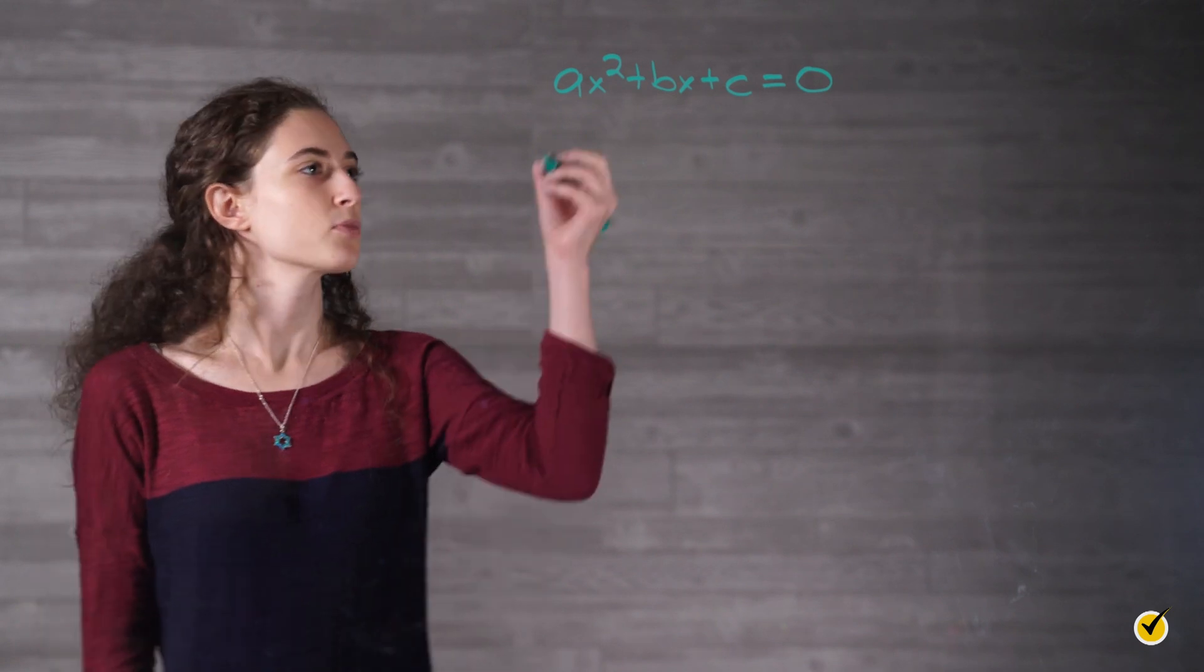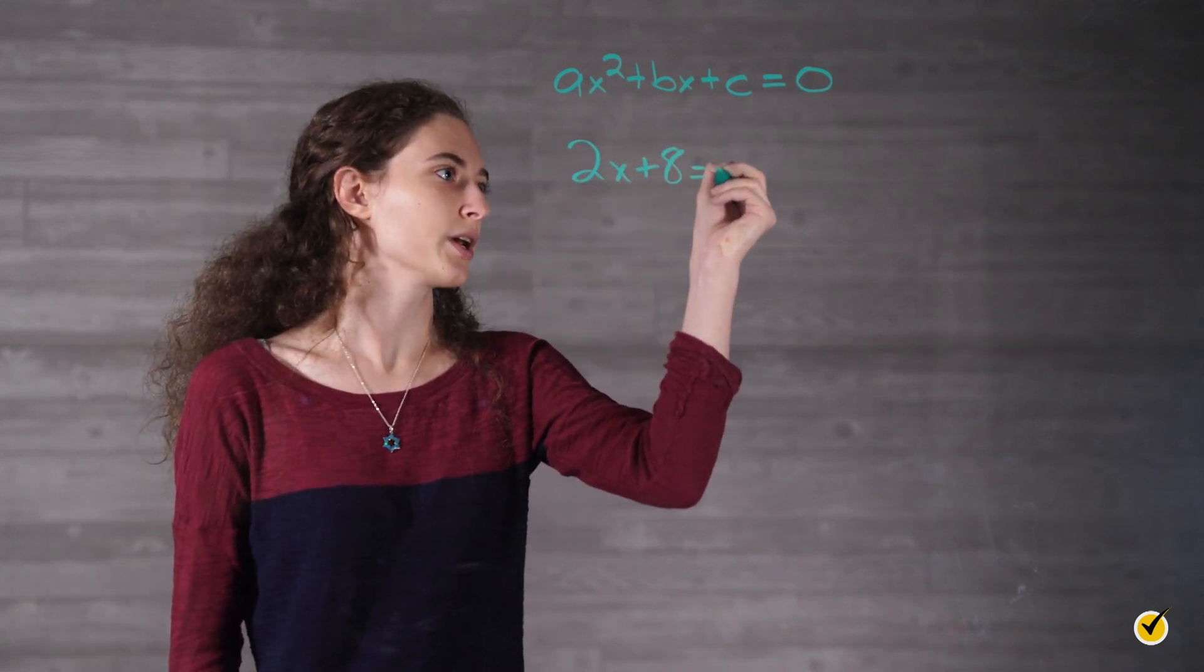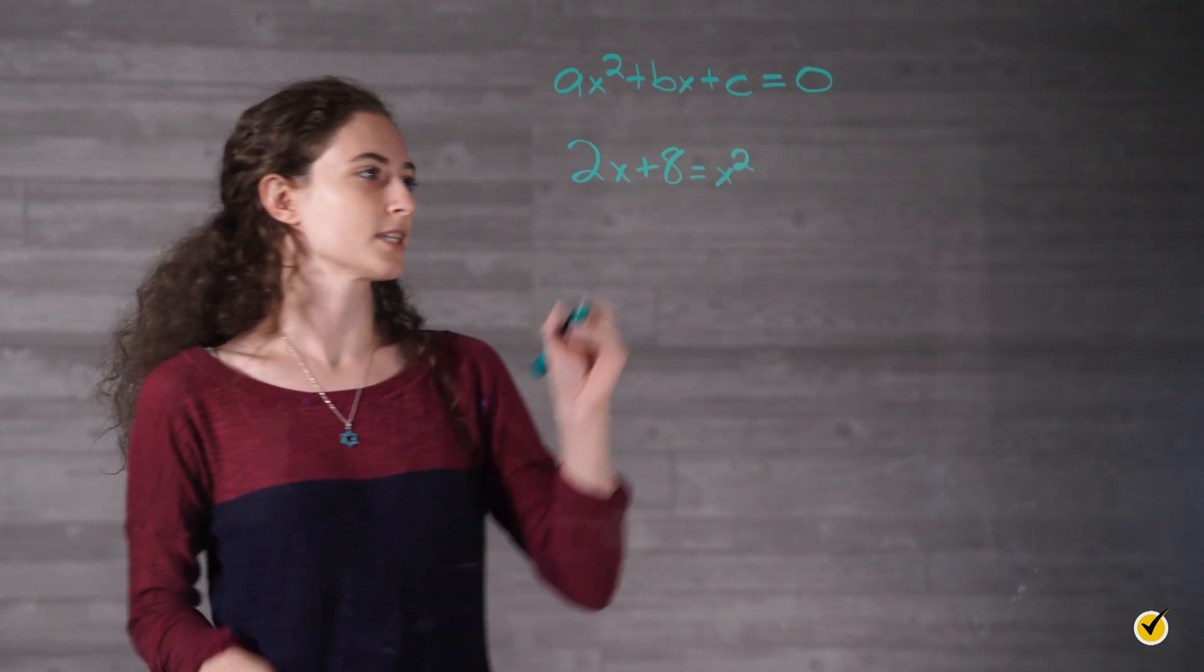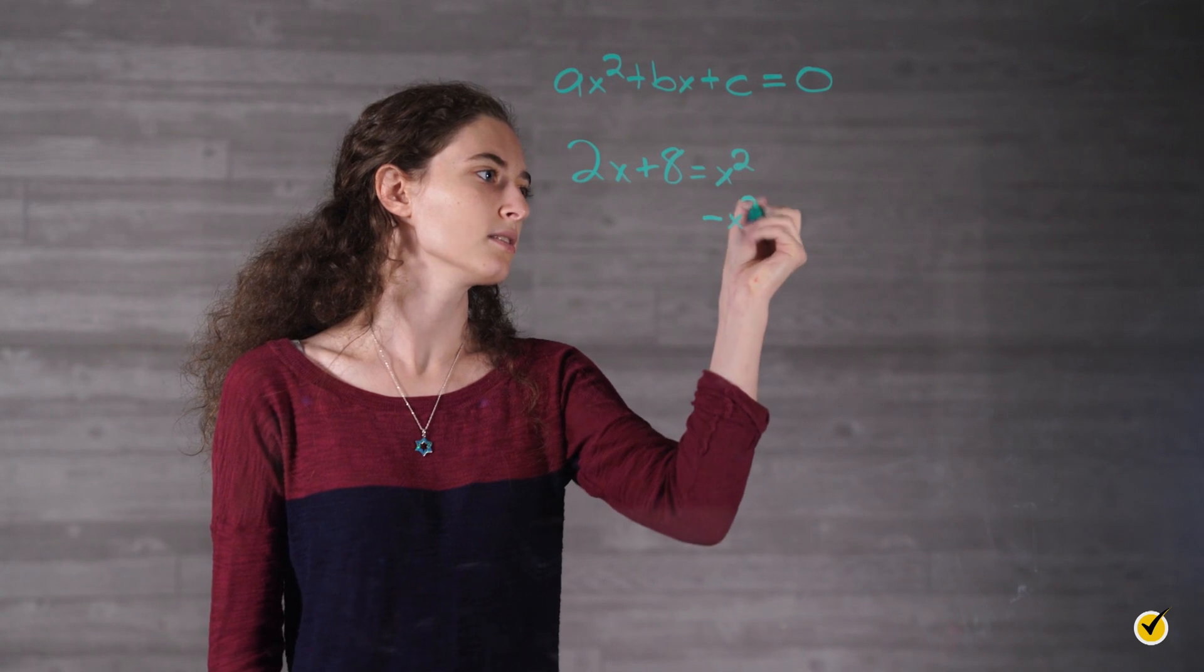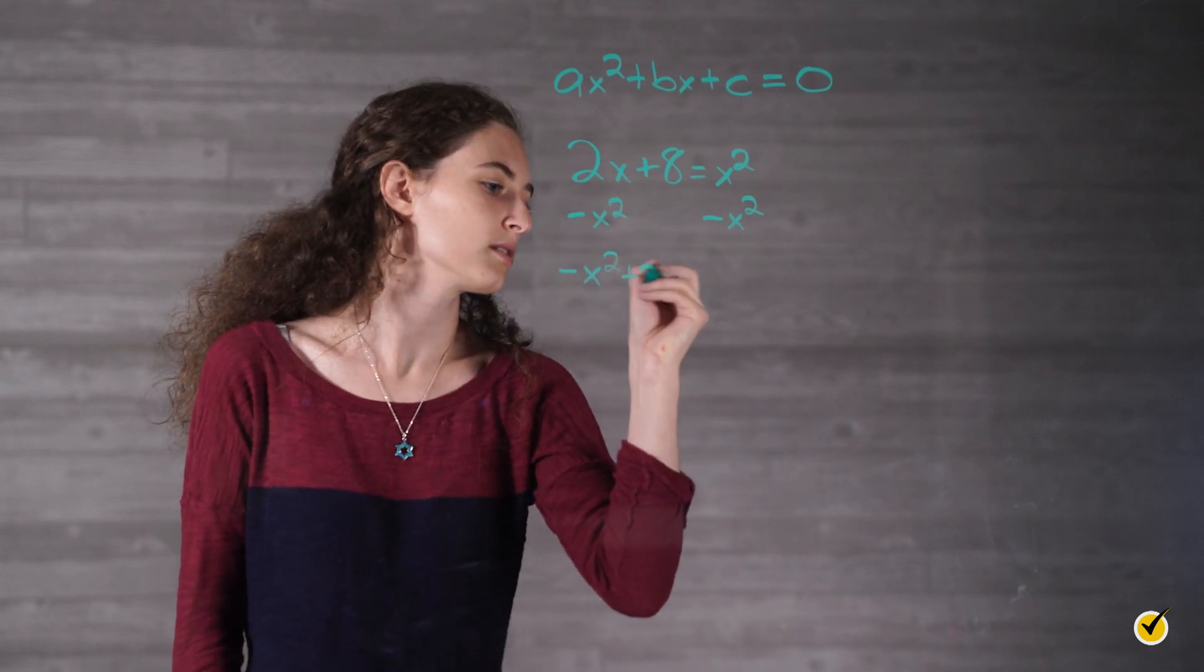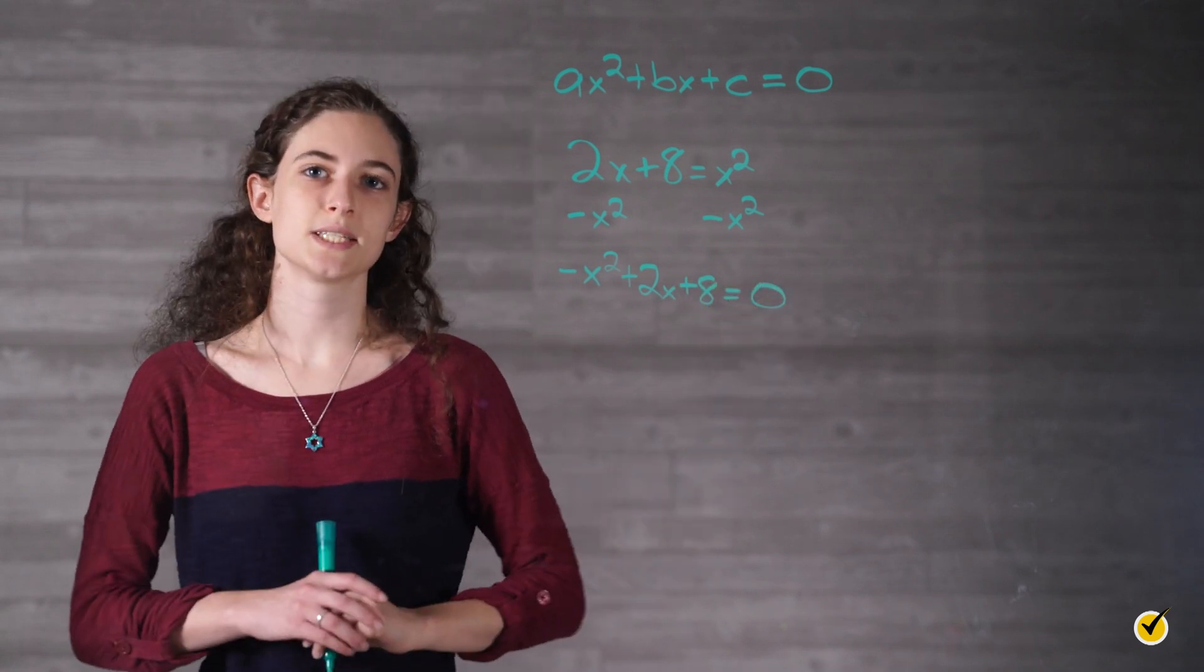For instance, 2x plus 8 equals x squared is not written in standard form, but by subtracting x squared from both sides, we get negative x squared plus 2x plus 8 equals 0, which is now in standard form.